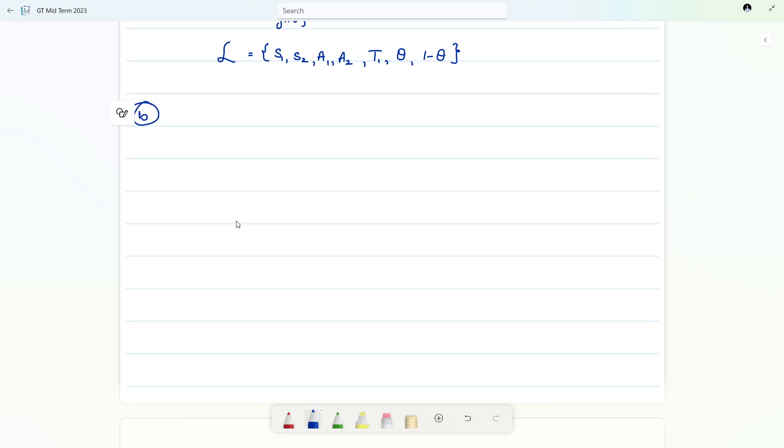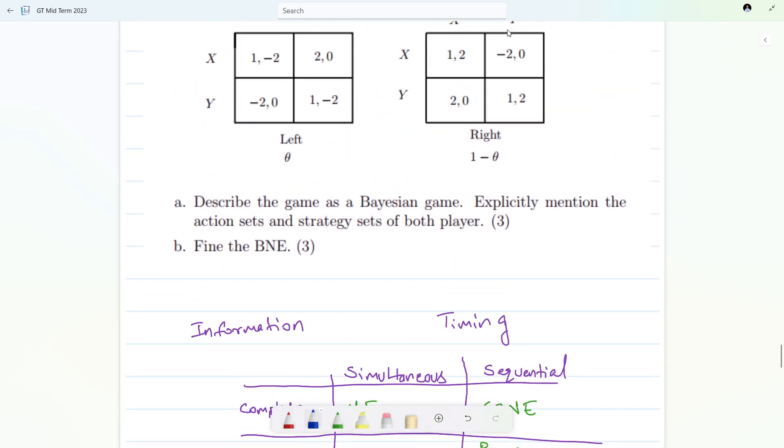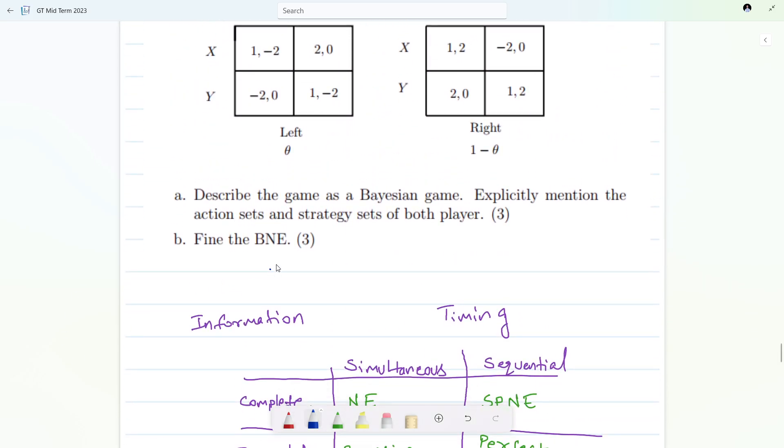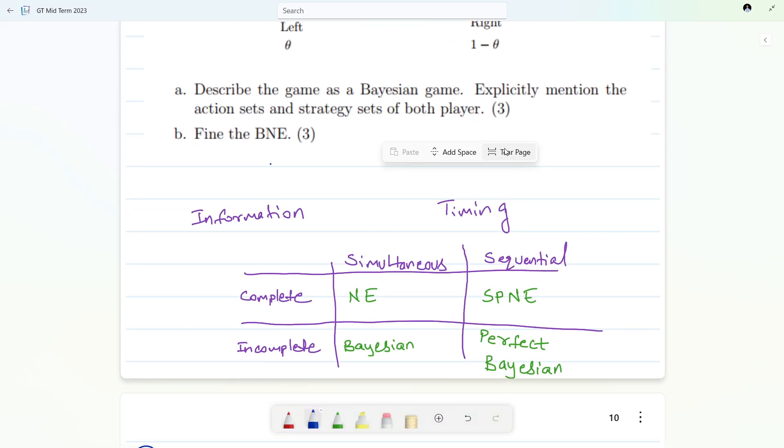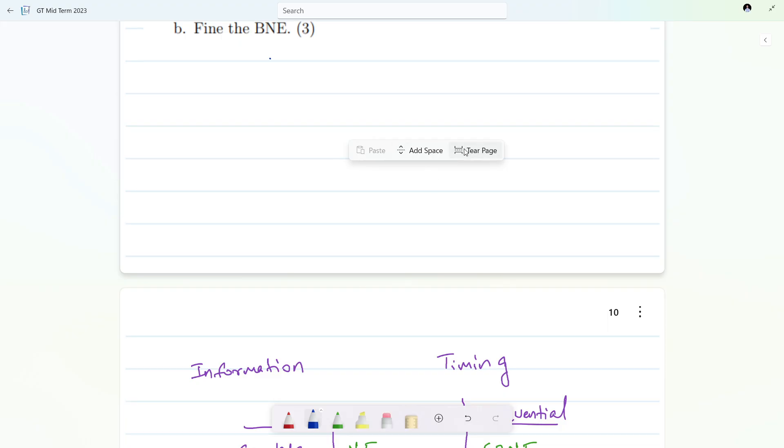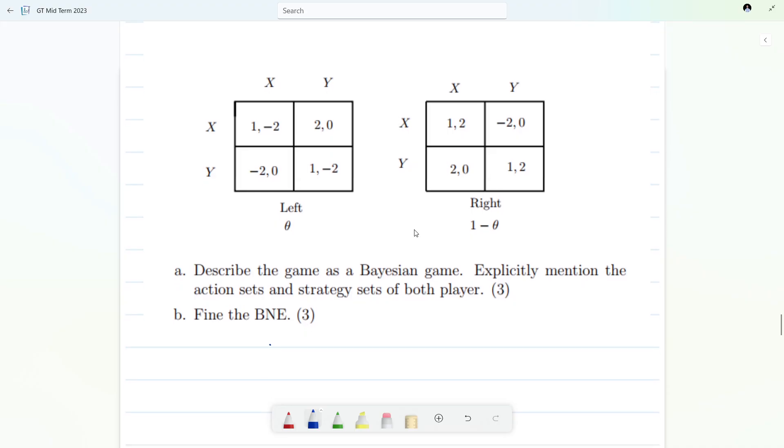Let me make a space here. Let's solve here itself. One thing for sure we know that player two can't distinguish whether the player one is in the left or in the right, but with the probability theta he can know that he is in left and with one minus theta he is in right.